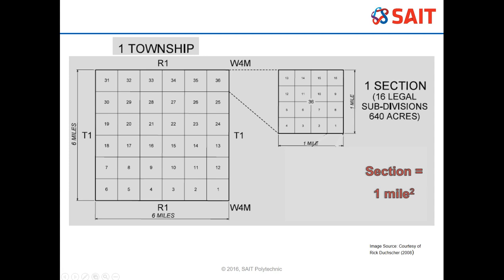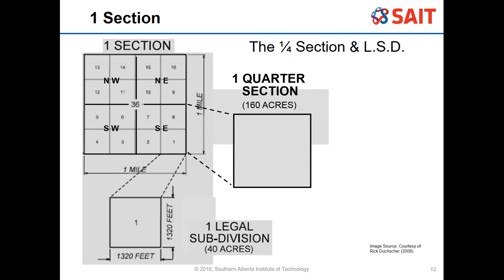There are two different ways to separate up a section. The first is an LSD - legal subdivision. The second way is quarter sections: southeast, southwest, northwest, and northeast. Quarter sections are always represented as NW, NE, SW, or SE - there is no number associated with them, whereas the legal subdivision uses an actual number. A quarter section is a half mile by half mile, and the legal subdivision is a quarter mile by a quarter mile.